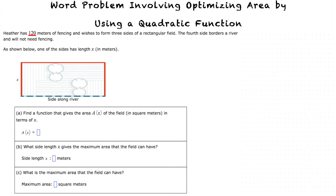In section A of the problem, we are asked to find a function that gives the area of the field in terms of x. We can find the area of the rectangular field by using the rectangular area formula, by multiplying the length and the width of the rectangular field.